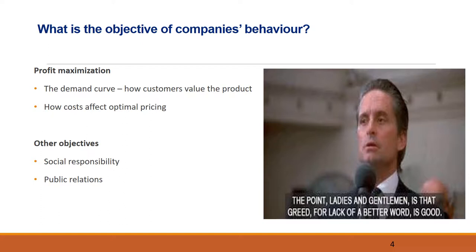Companies may have various objectives. However, generating a profit for their shareholders is for most companies the main objective. Other objectives may be to have a high degree of social responsibility or to be well-perceived in society. The focus of the economics of competition law is how companies price their products to optimize their profit and how they compete in general. We will deal with costs in a separate video, and today the focus is on only the notion of demand.